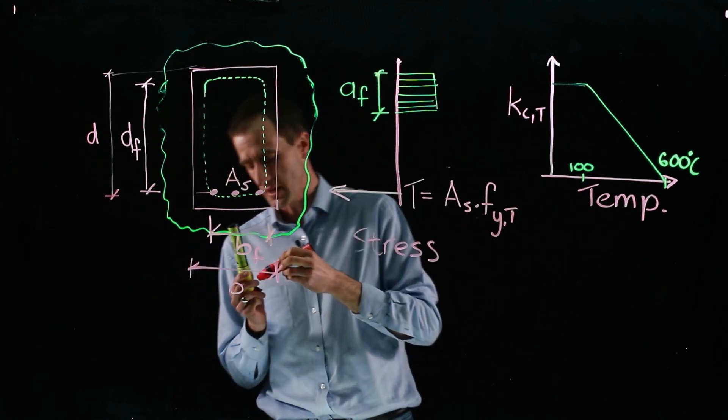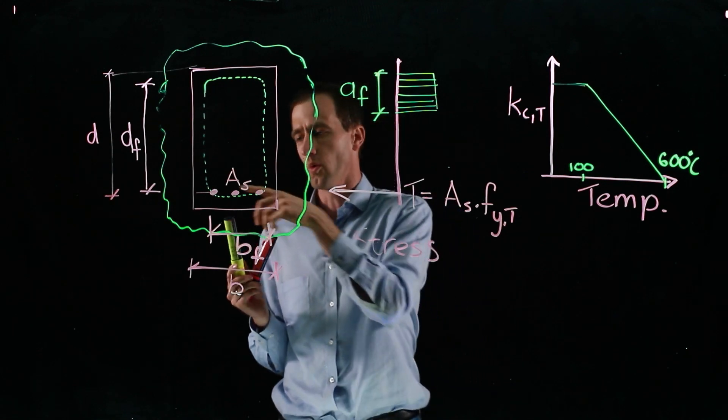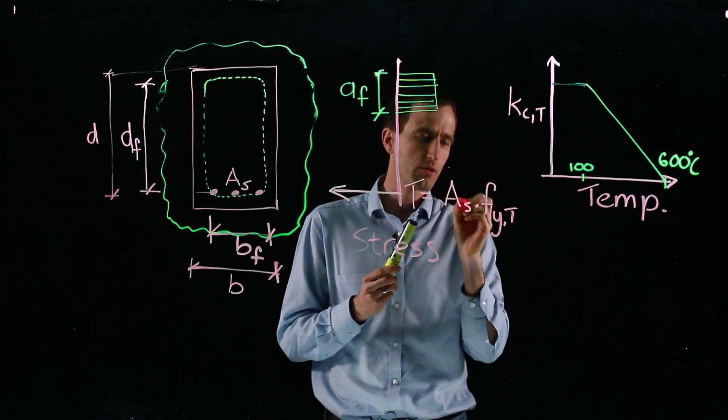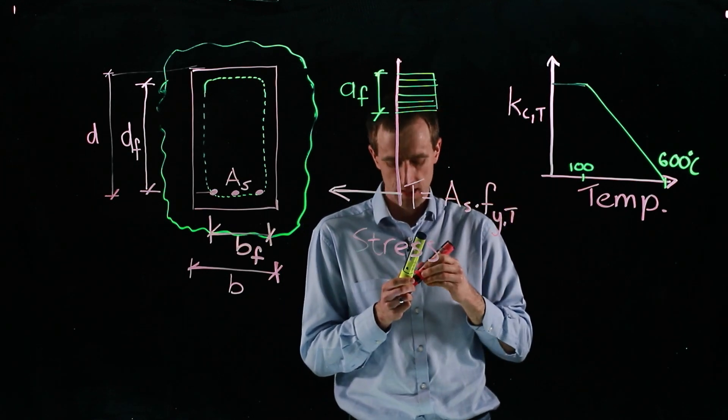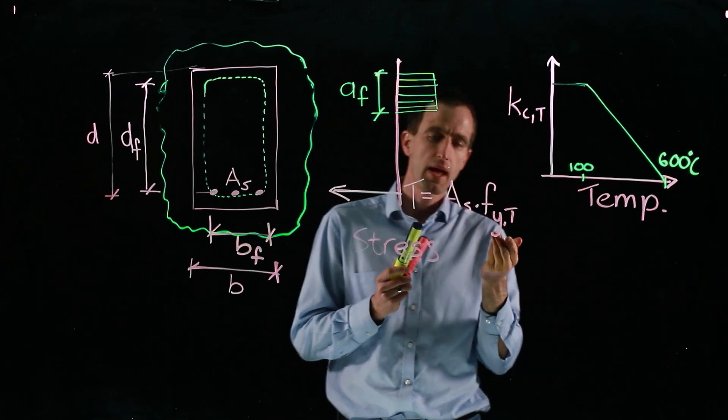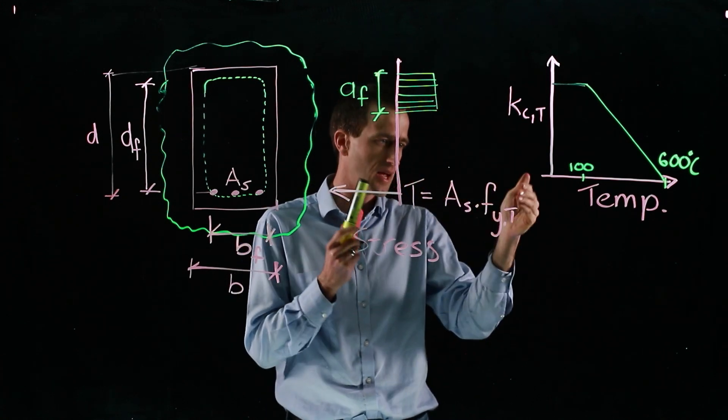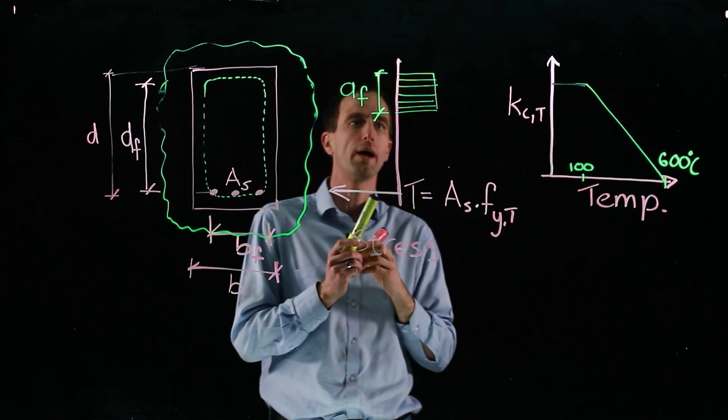We can, if needs be, get a weighted average or assume a maximum across all three. There are different ways of doing it. So we have an area of steel times a reduced yield strength. And the partial factor here is one. There is an actual partial factor, you just don't see it because it's one.